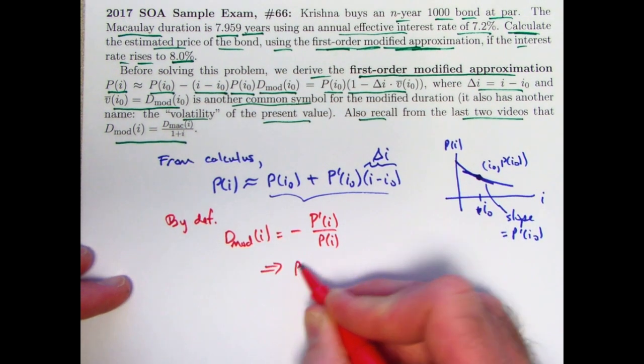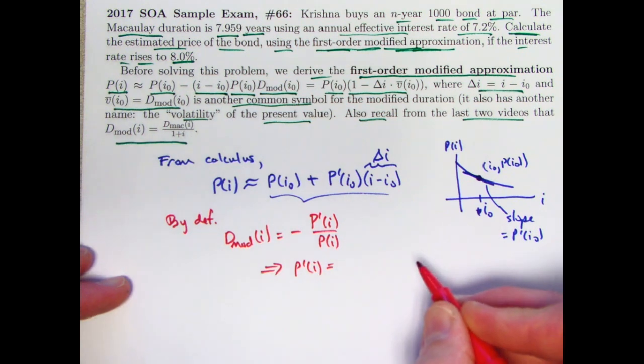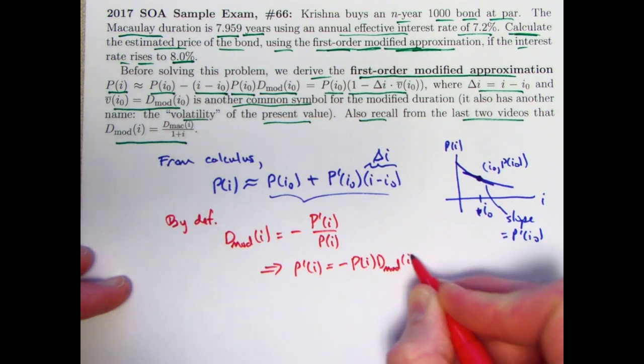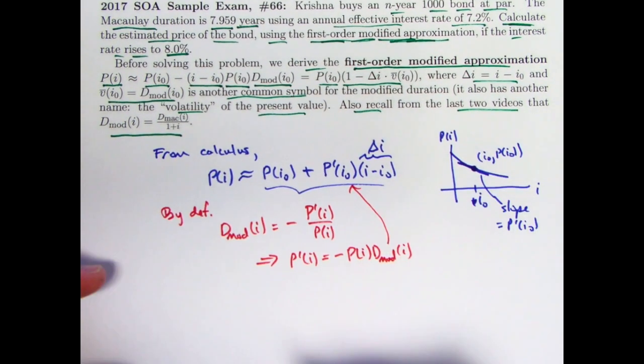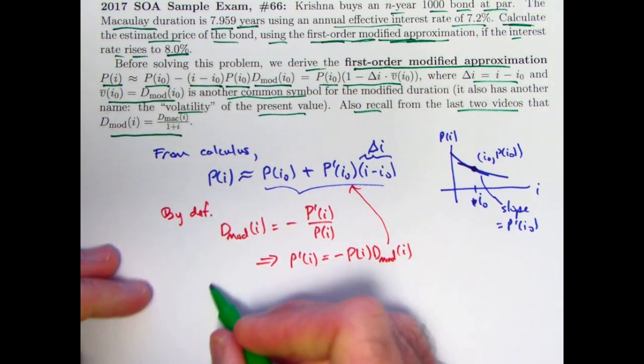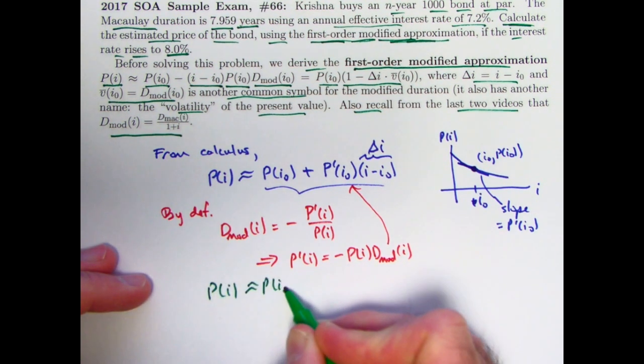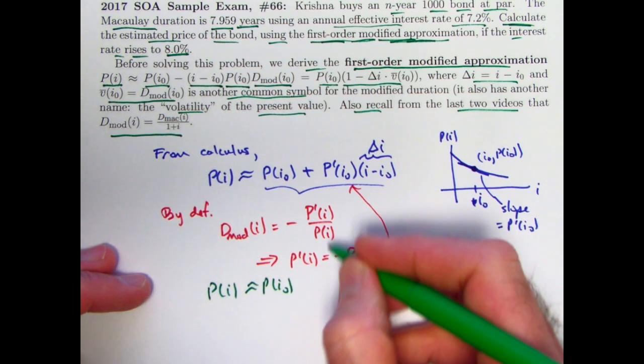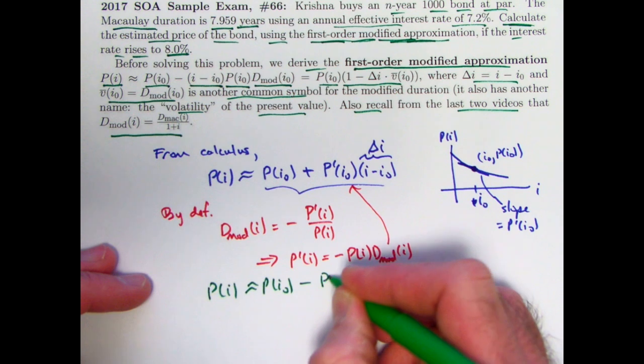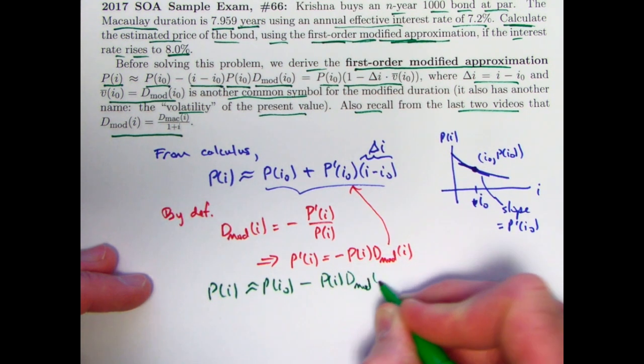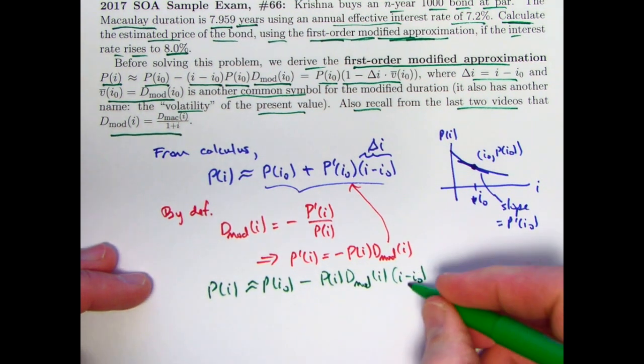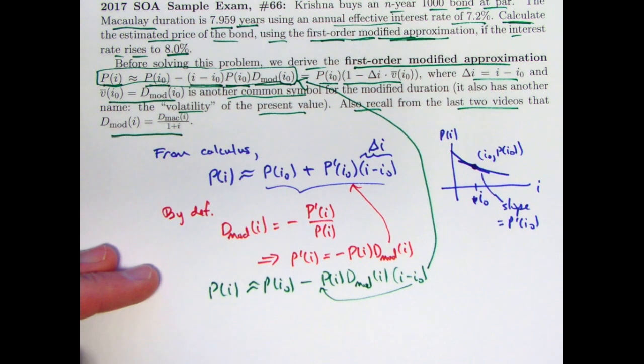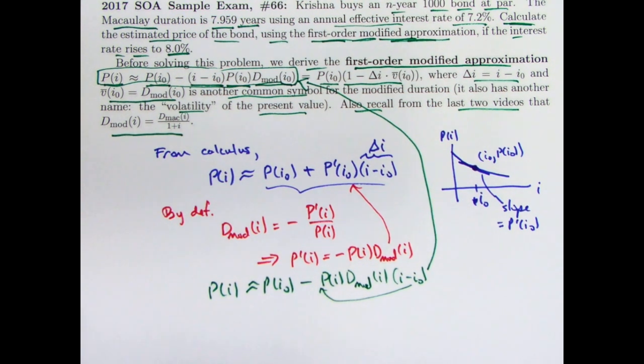Now just solve this equation for p'(i). p'(i) equals by multiplying both sides by p(i) and also multiplying both sides by negative 1 is negative p(i) times the modified duration. Now plug that in there, replacing i with i0, and that will be the end of the derivation. So p(i) is approximately p(i0). Replace p'(i0) with negative p(i0) times d_mod(i0) plugging in i equals i0. The negative sign makes this plus sign a minus sign. p(i0), d_mod(i0), times i minus i0. And of course, we can bring that i minus i0 in front if we'd like to make it match this. So we have now derived this first-order modified approximation called a modified approximation because it involves the modified duration.